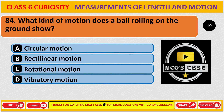What kind of motion does a ball rolling on the ground show? The correct answer is B, rectilinear motion.